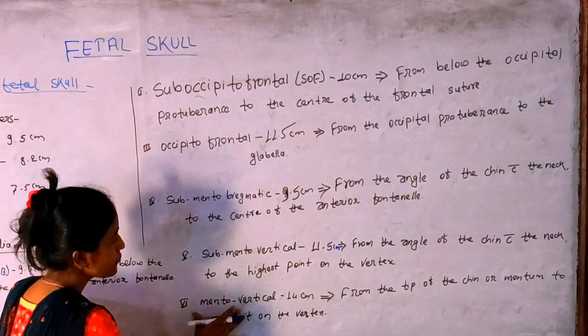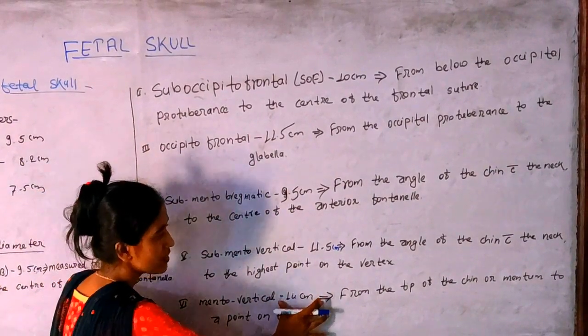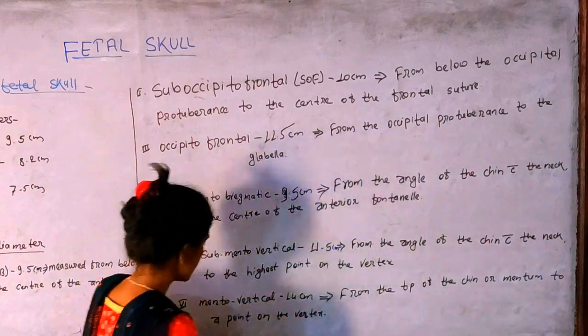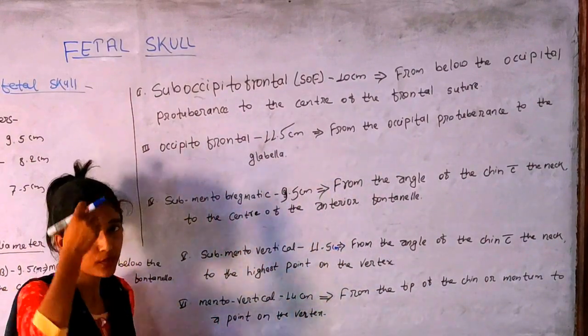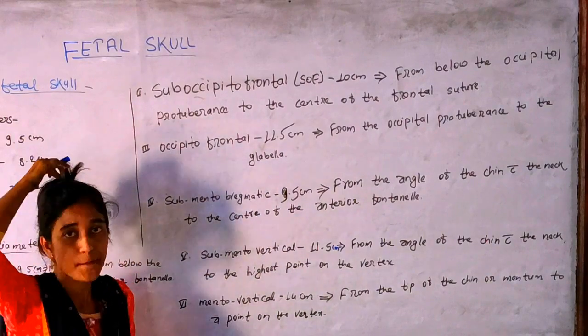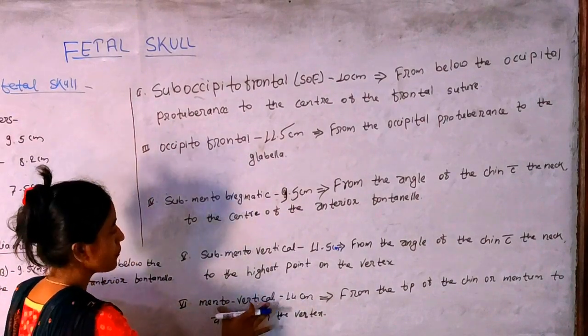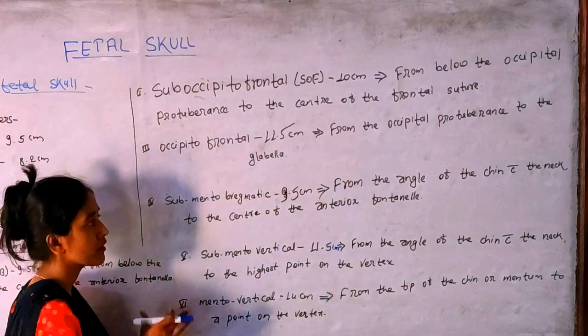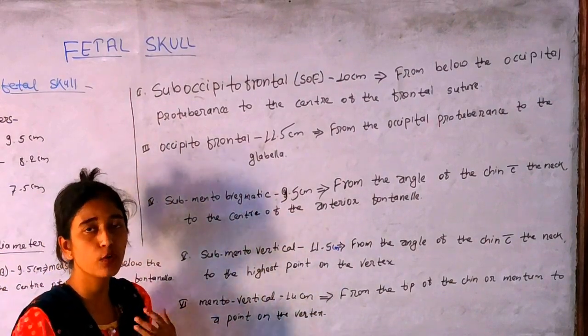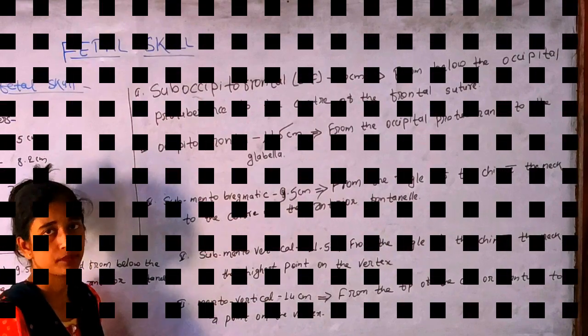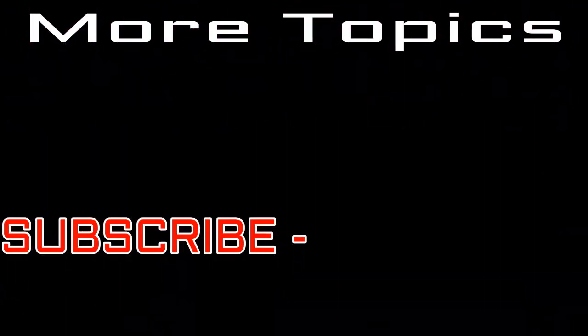The submentovertical diameter is measured from the chin to the vertex. Maintaining the vertical distance, this diameter is approximately 13.5 cm or can also be referenced as 40 cm in some data. The various diameters help describe fetal skull dimensions relevant to delivery.